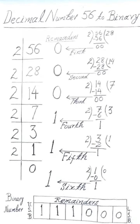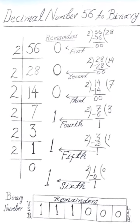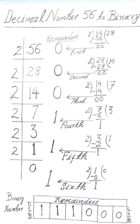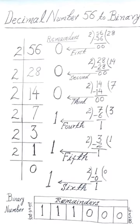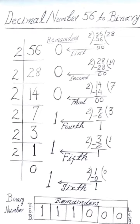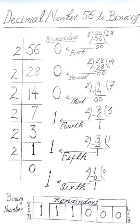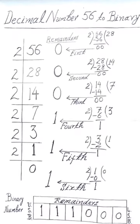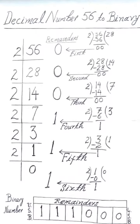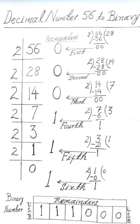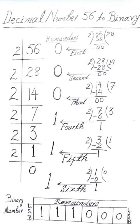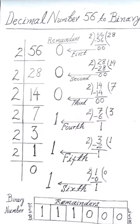We divide 3 by 2 and the remainder 1 is the fifth remainder. Last, we divide 1 by 2 and the remainder 1 is the sixth remainder. Now we will write all remainders from the lower side bit to the upper side bit.